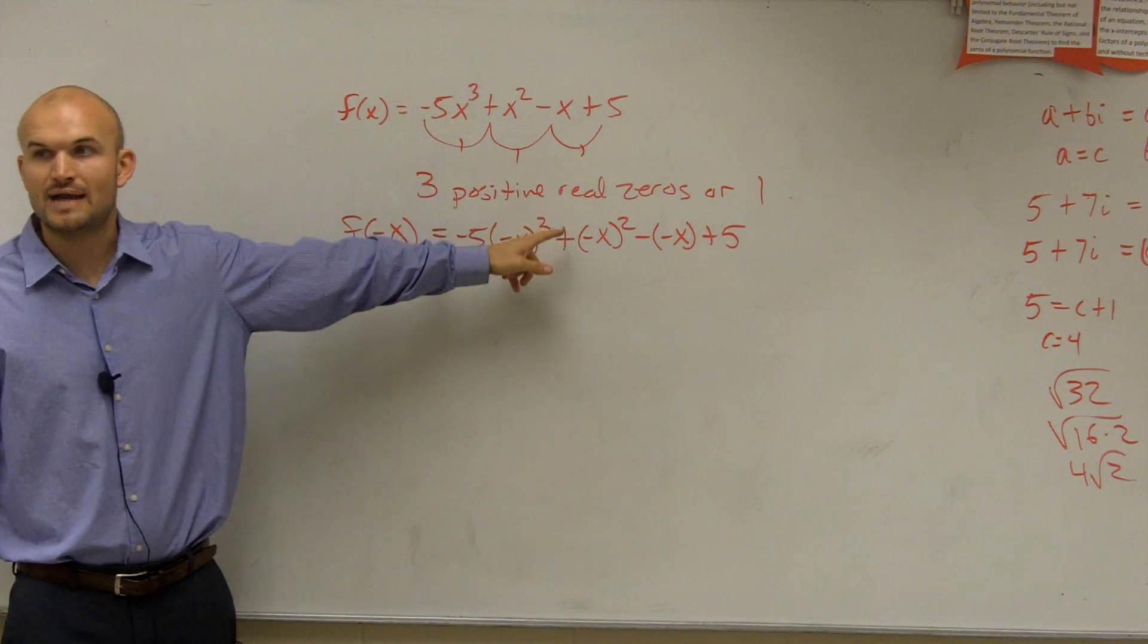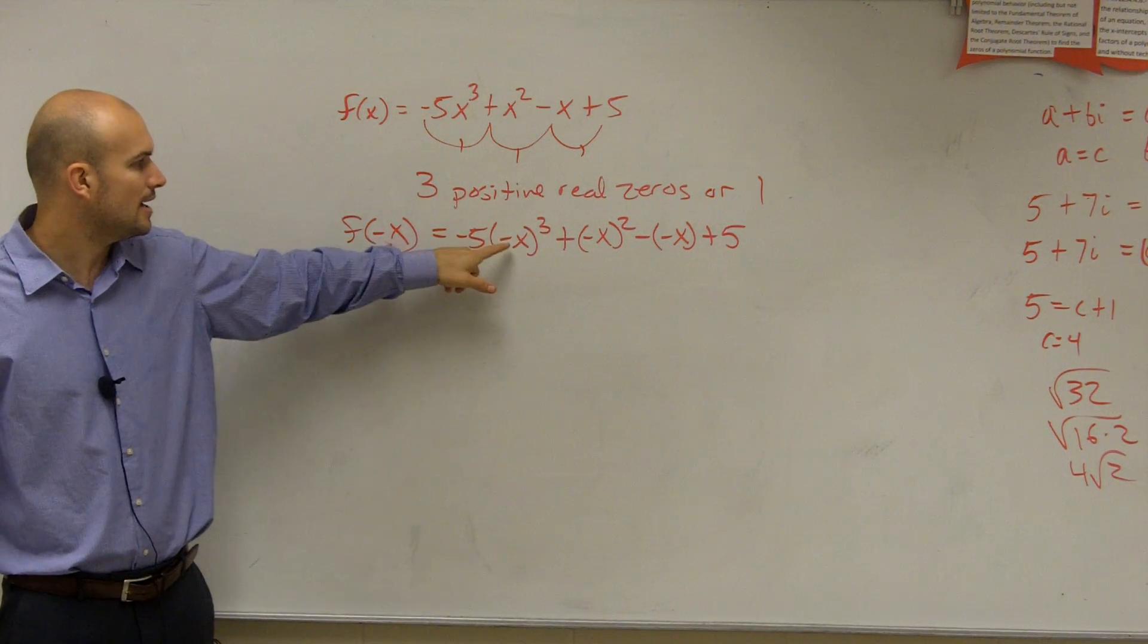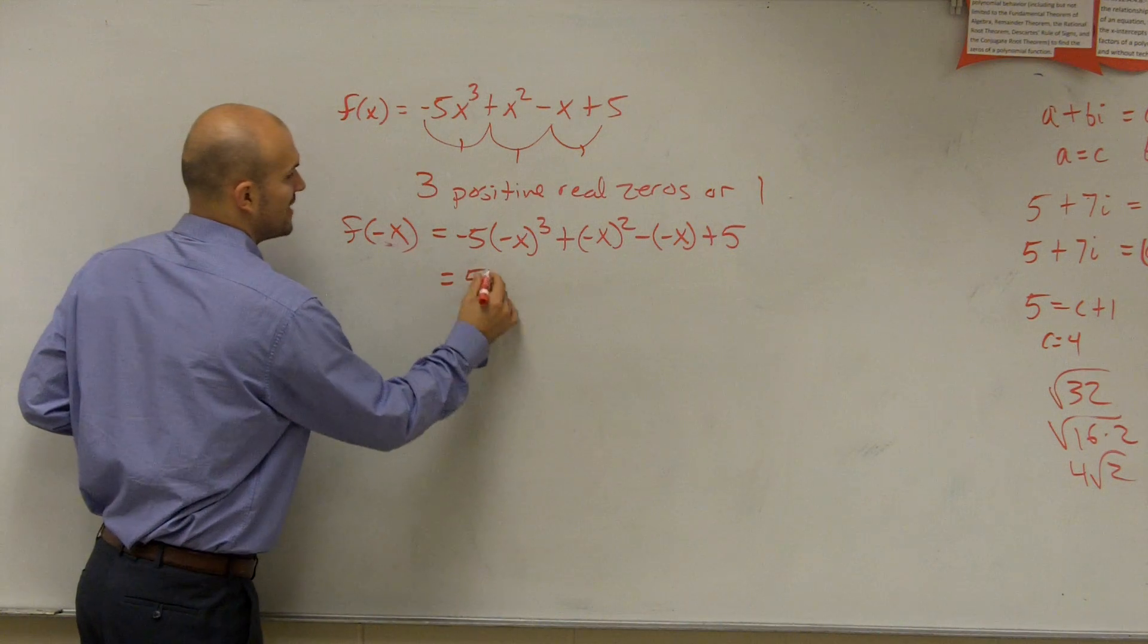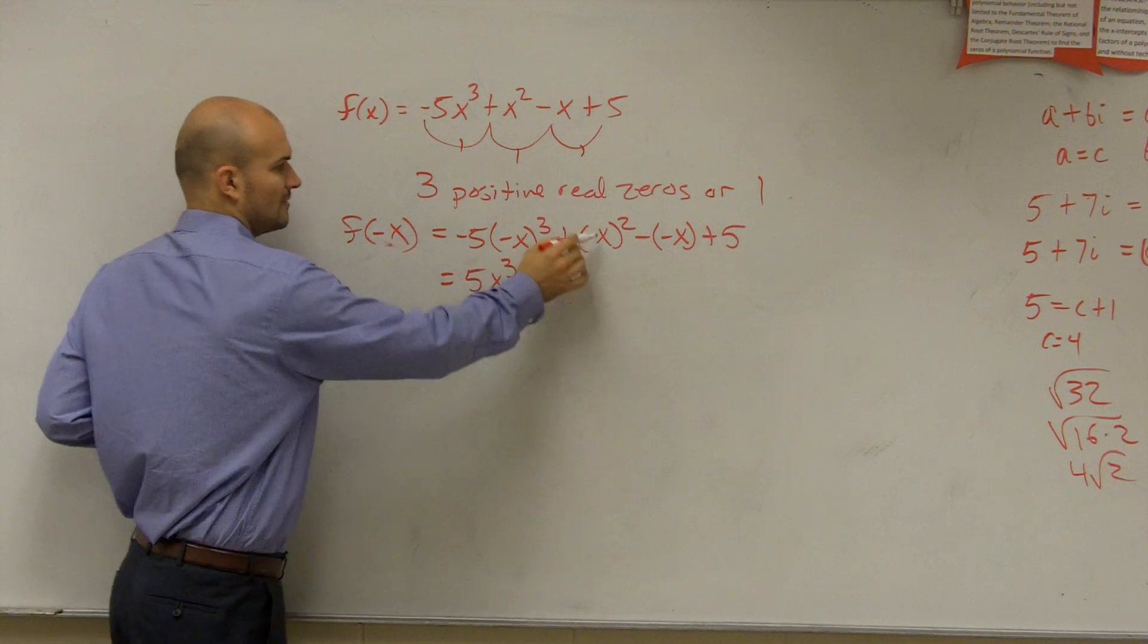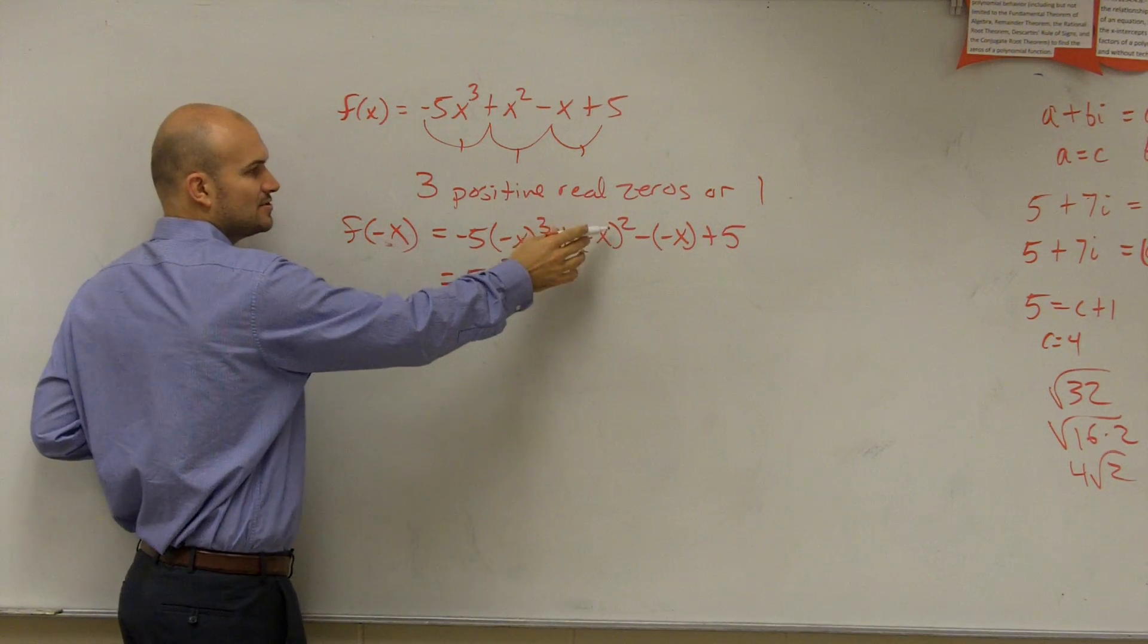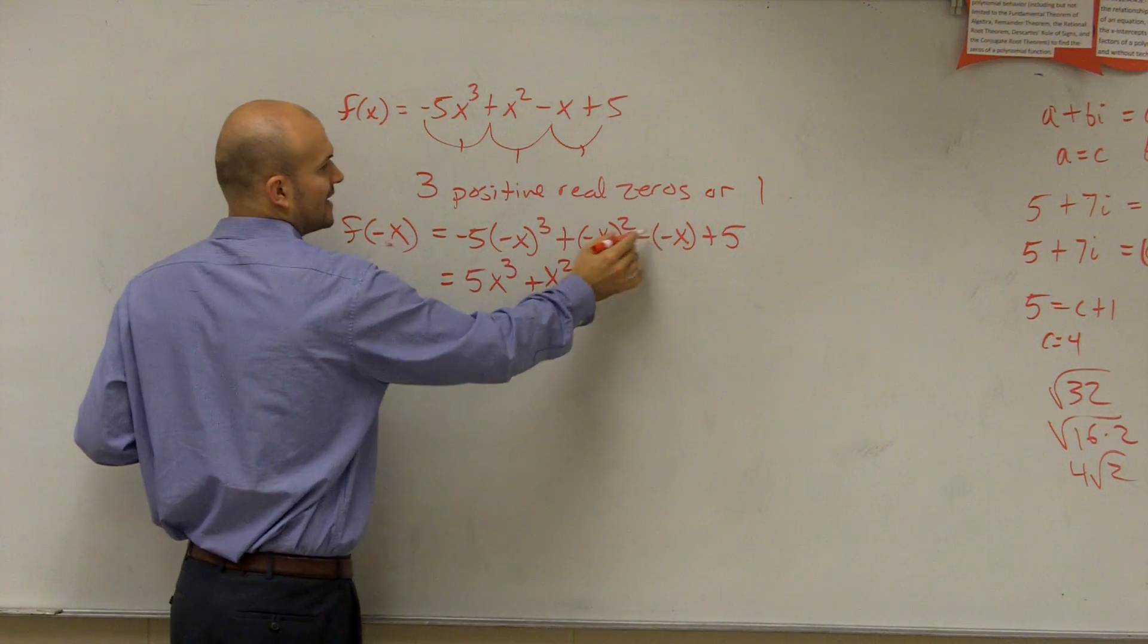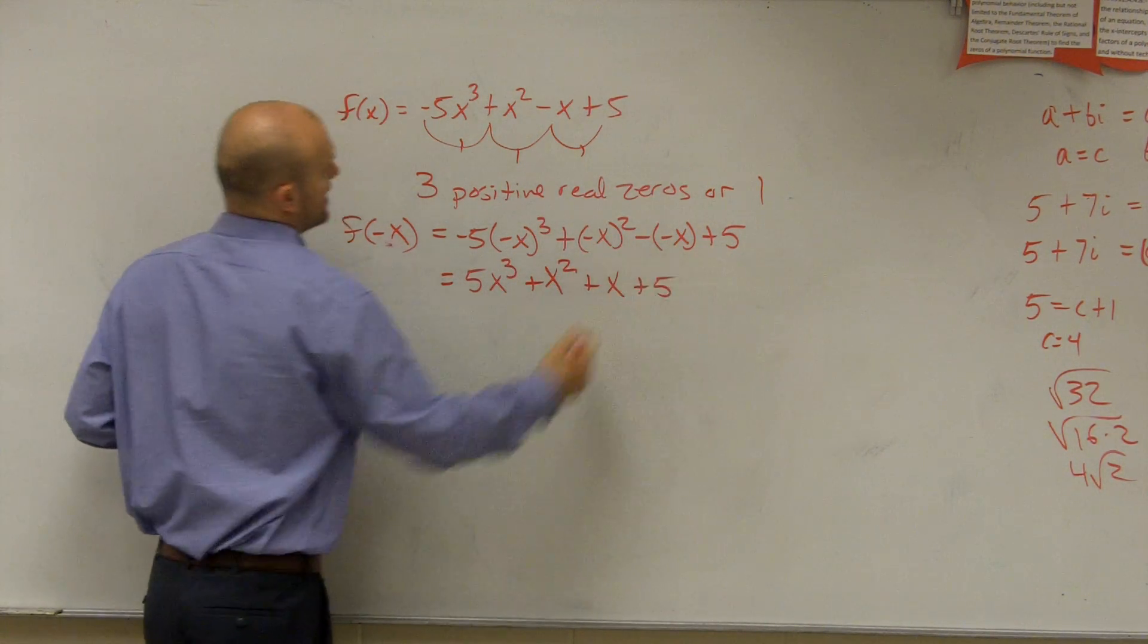Negative x raised to an odd power is still going to give me negative x, then times a negative 5 is going to give me a positive 5x cubed. Negative x squared, negative x raised to an odd power, which is going to give me now a positive x squared. Negative times a negative would be a positive x, positive 5.